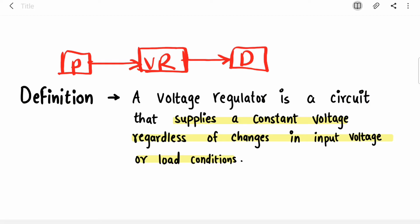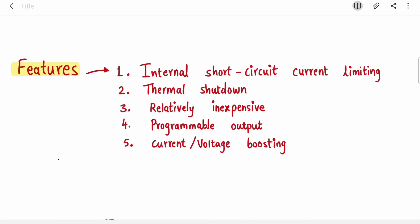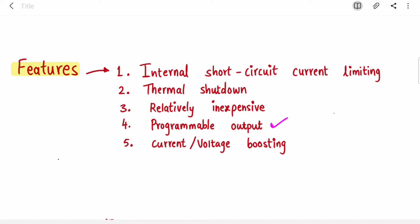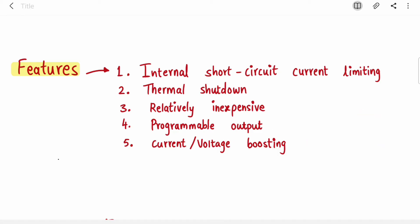Now the concept is clear. If the definition is asked in an exam, along with the definition you will have to write the features. The features of IC voltage regulators are: first, internal short circuit current limiting mechanism; second, thermal shutdown — if the temperature of the IC starts increasing it will shut itself down; third, these IC voltage regulators are relatively inexpensive; fourth, some programmable voltage regulators provide a digital interface where you can set the output; and fifth, current and voltage boosting.